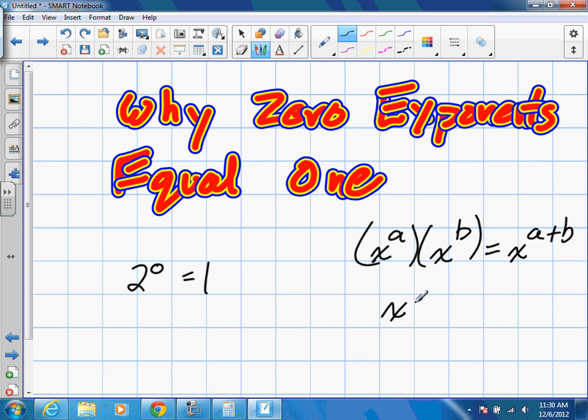And the same idea is if we have similar bases and we're dividing them, we'll just subtract the two.